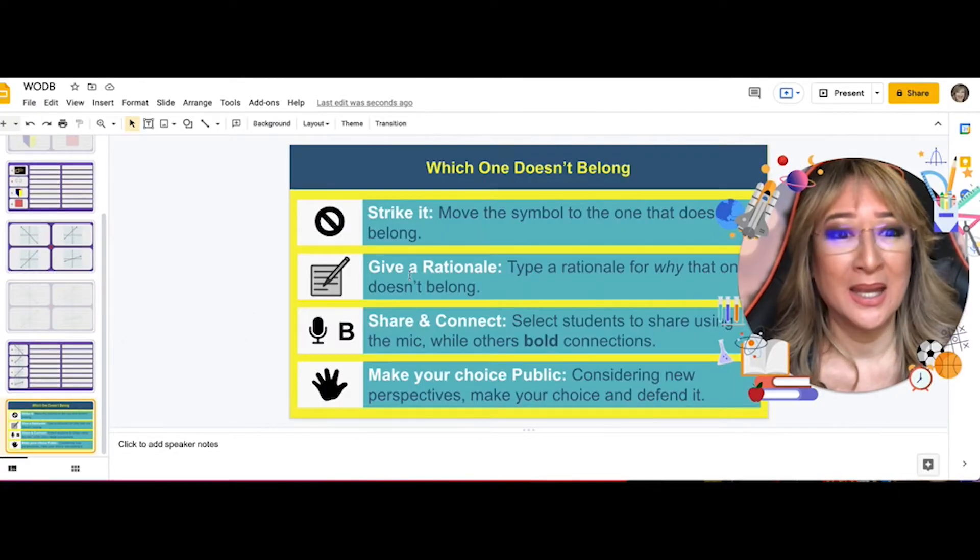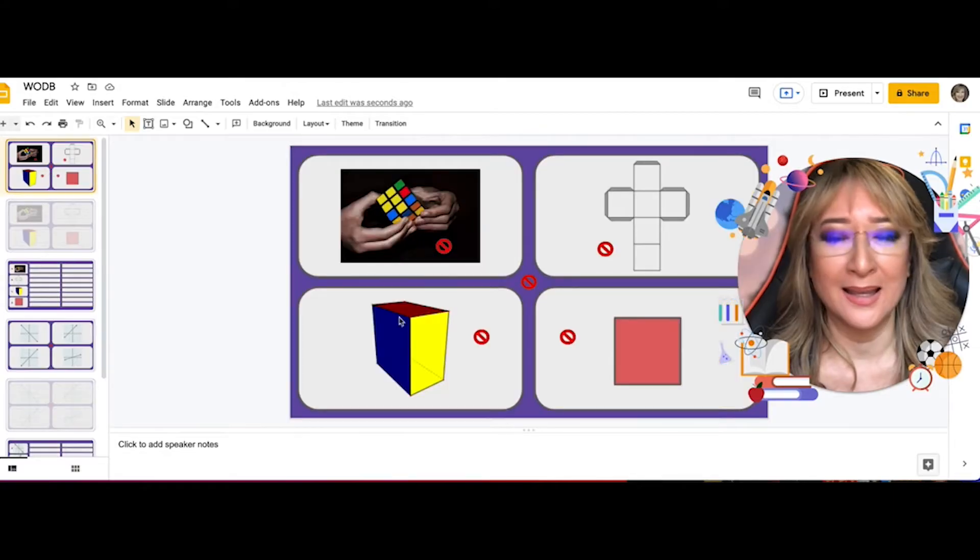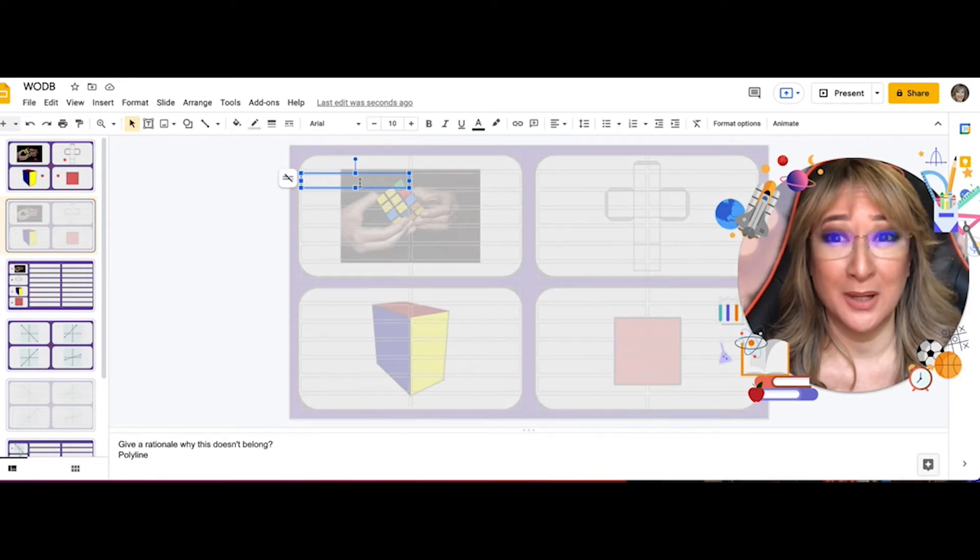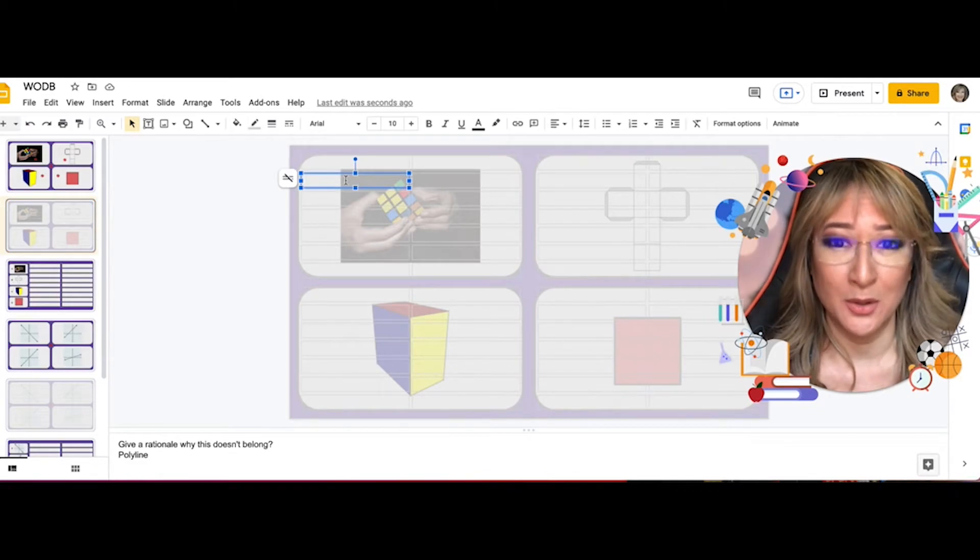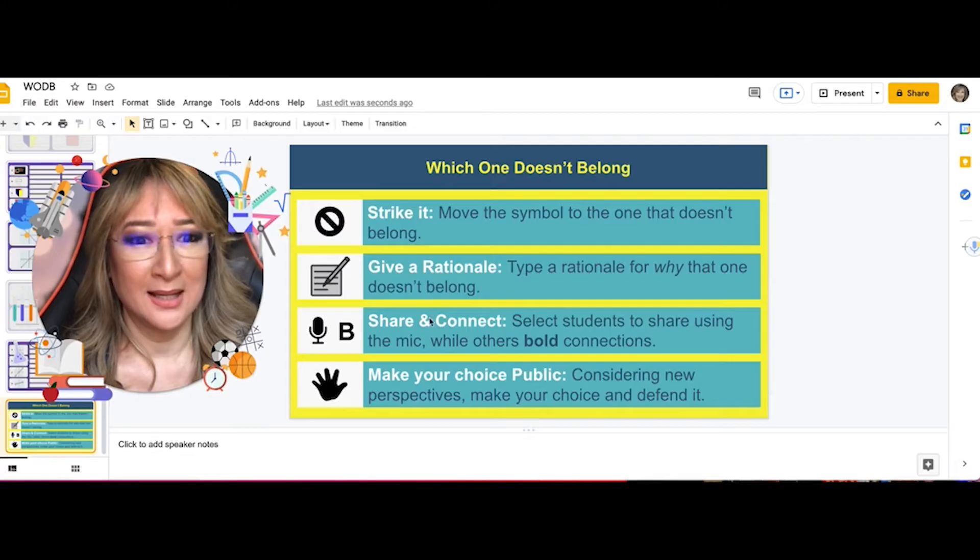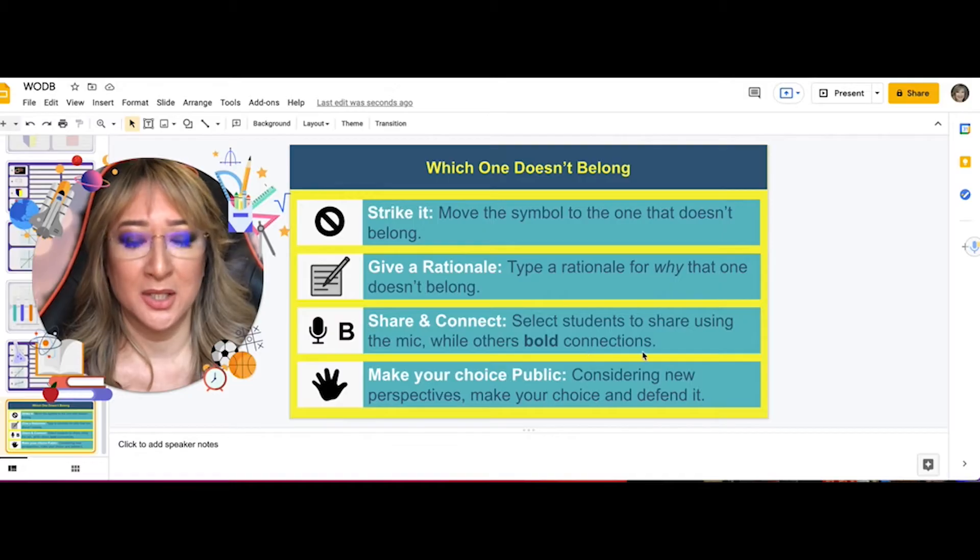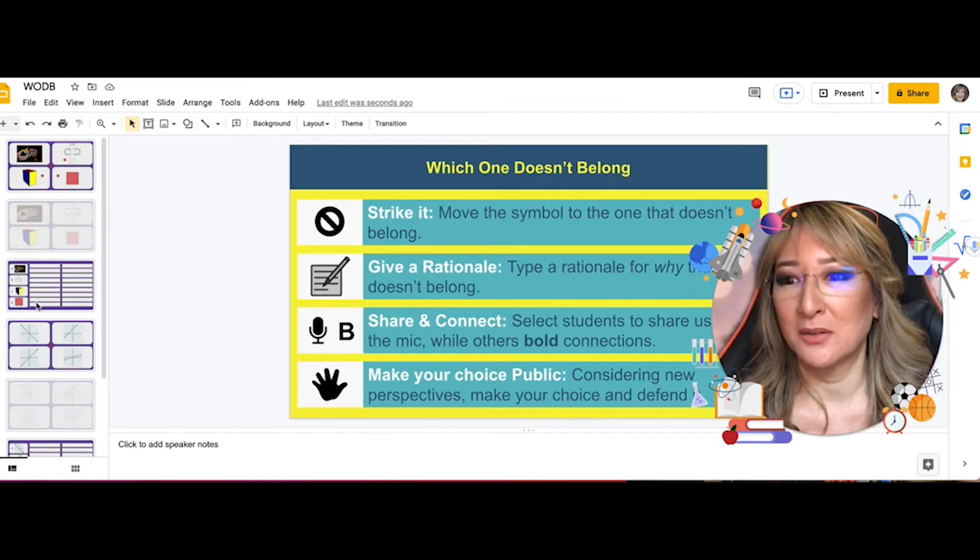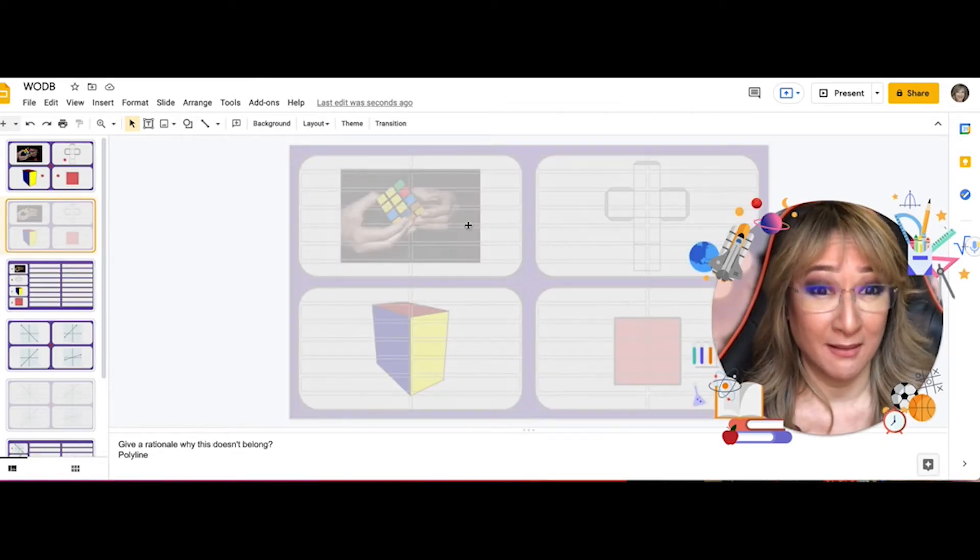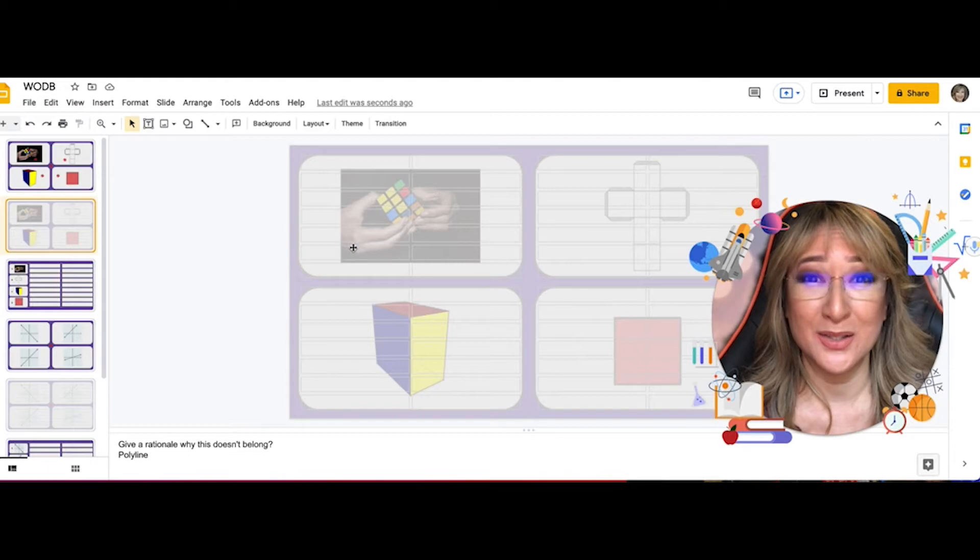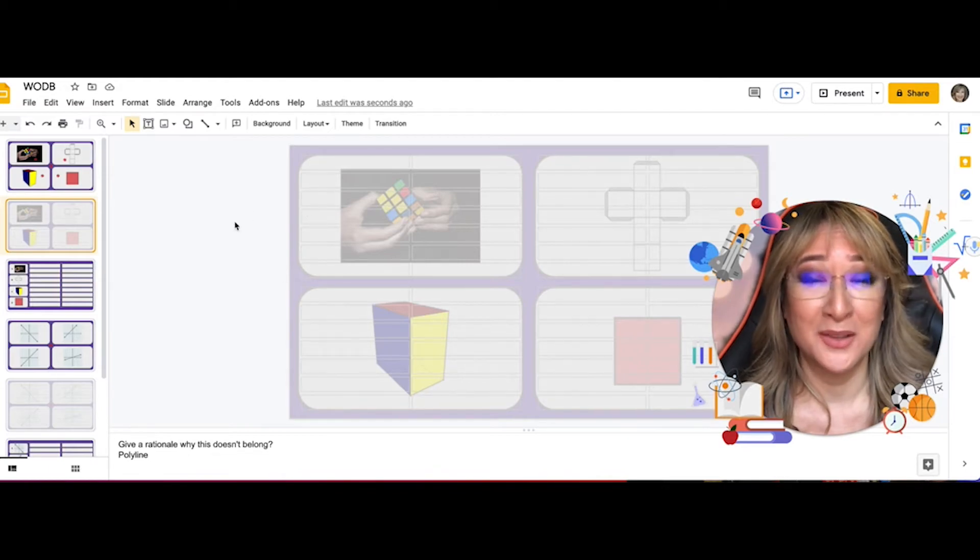And then the second step, if we navigate to the second step, give it a rationale. On the next slide, if you chose this one as not belonging, you take one of these boxes here and you give a rationale. And this is anonymous, so you can keep your rationale anonymous. And then she asks students here to select students to share using the mic or while others bold connections. So the third step is sharing and connecting.